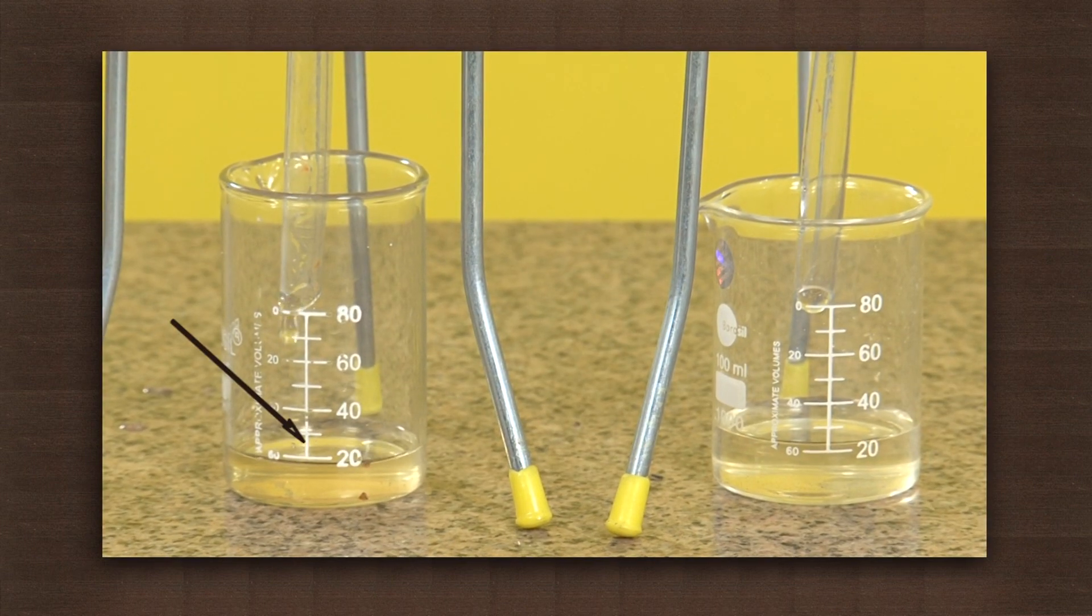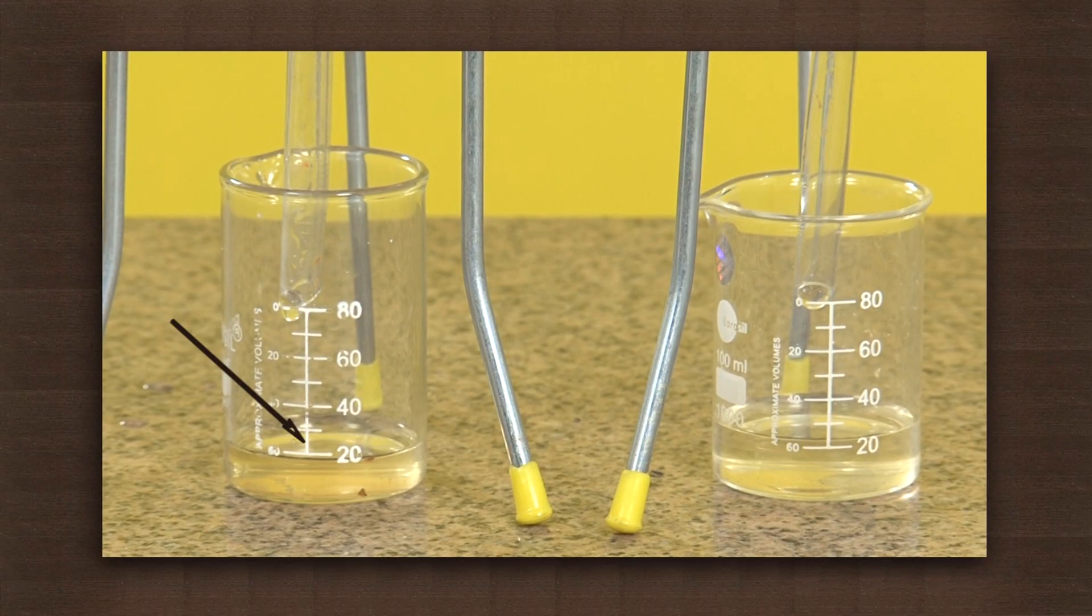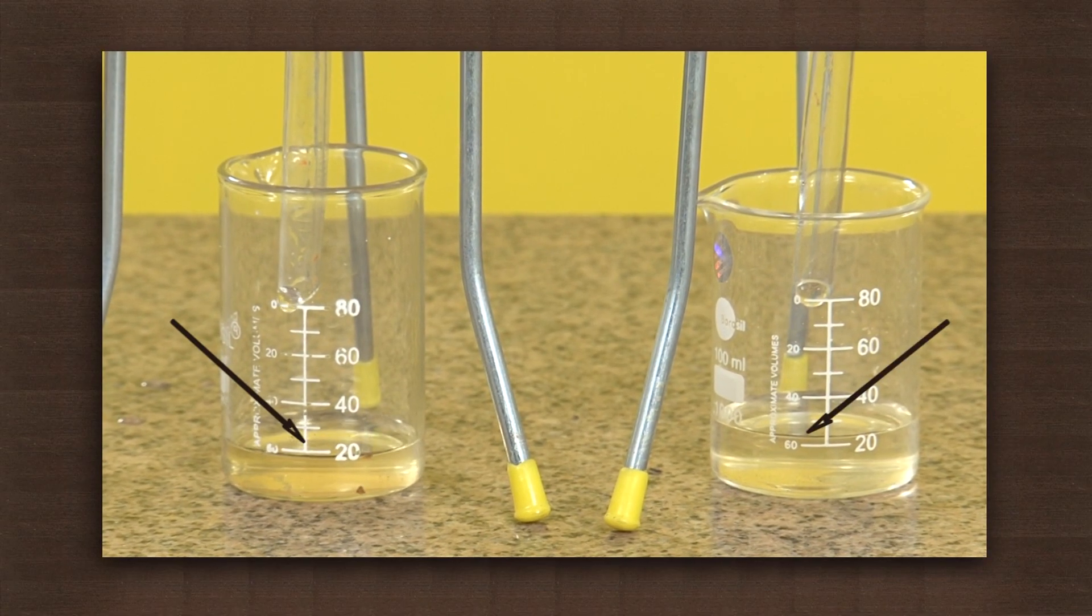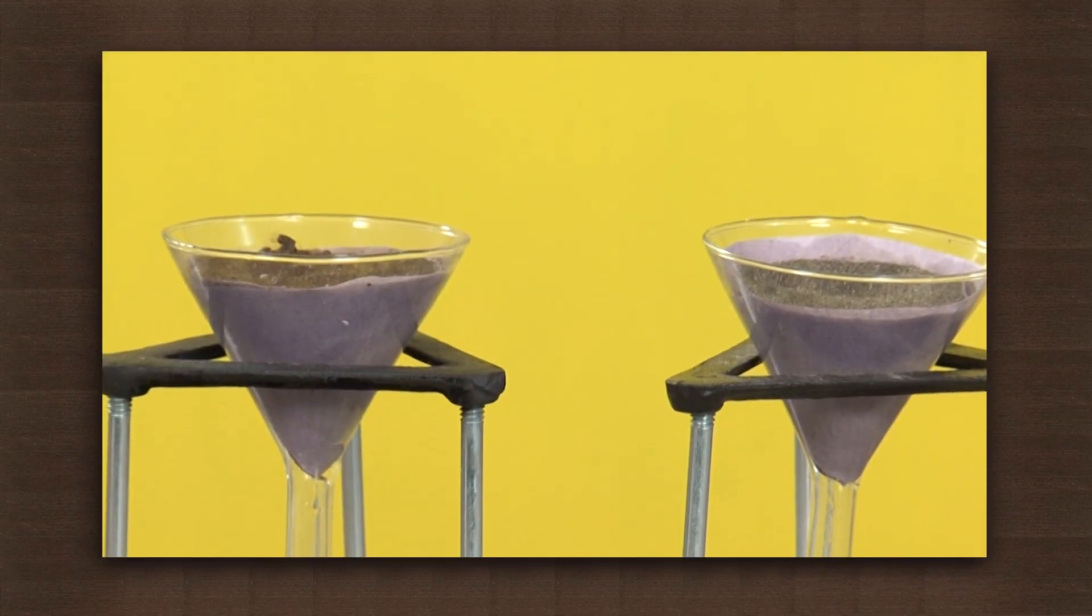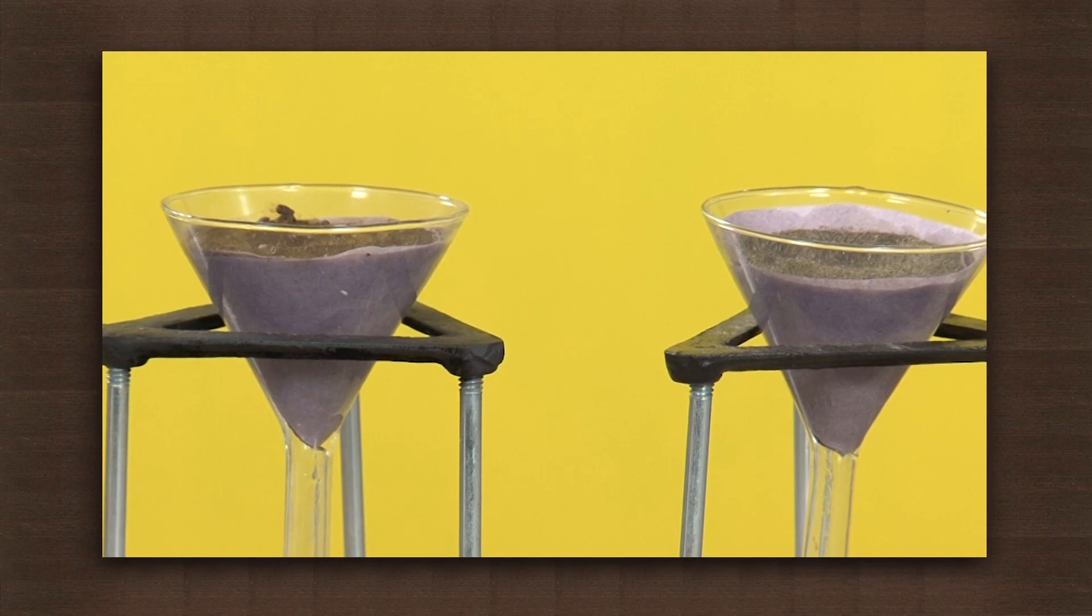Slightly less than 20 cc of water seeped through the soil while a bit more than 20 cubic centimeters of water seeped through the sand funnel. Therefore the water holding capacity of soil is more than that of sand.